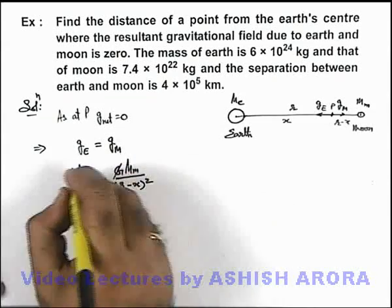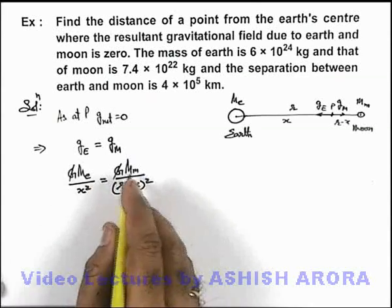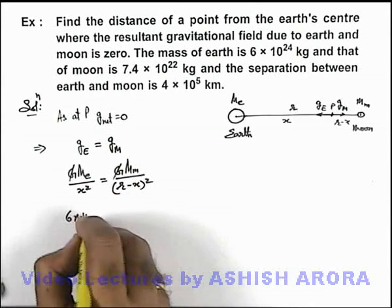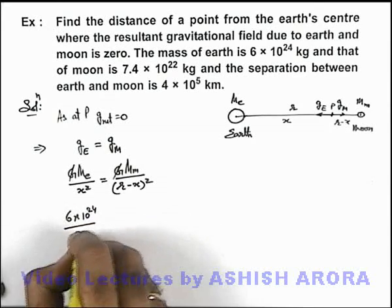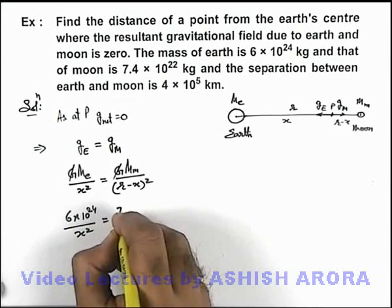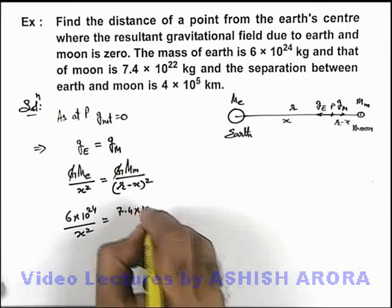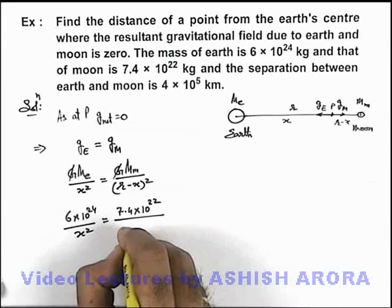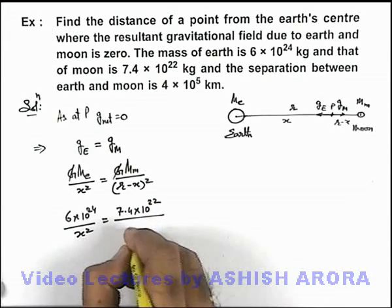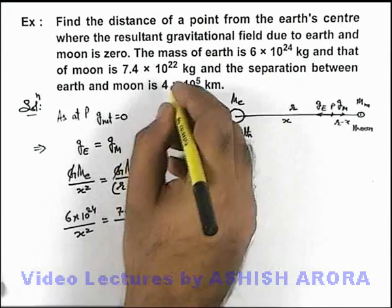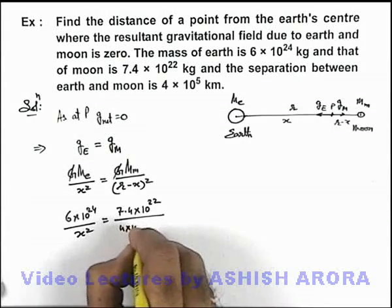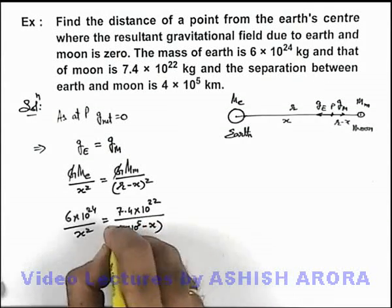Here G gets cancelled out, and if we substitute the values, mass of earth we are given with 6 × 10^24 by x square is equal to 7.4 × 10^22 divided by r minus x. If we substitute the value of r, it is 4 × 10^5 minus x whole square.